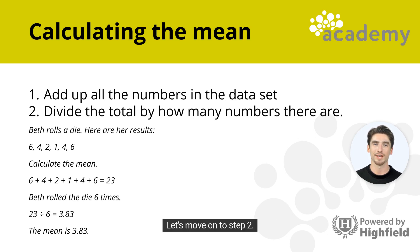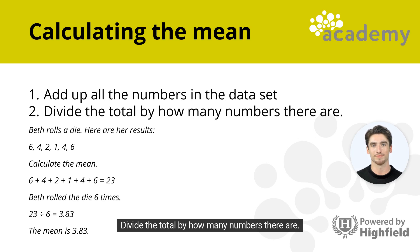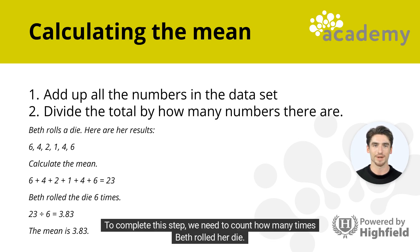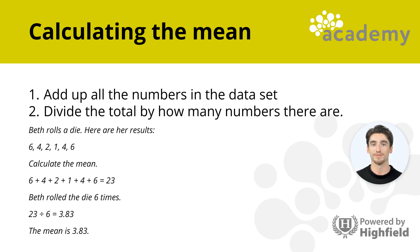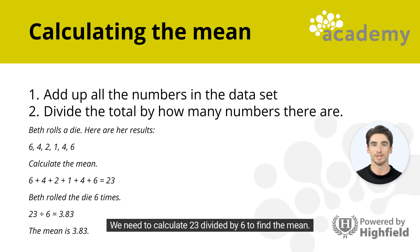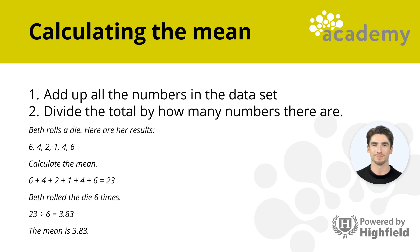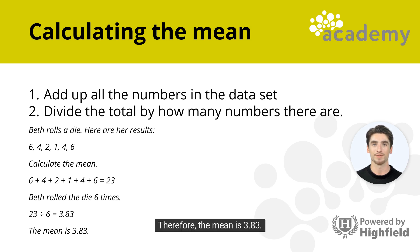Let's move on to Step 2: divide the total by how many numbers there are. We need to count how many times Beth rolled her die — she rolled it 6 times. We calculate 23 divided by 6, which equals 3.83. Therefore, the mean is 3.83.